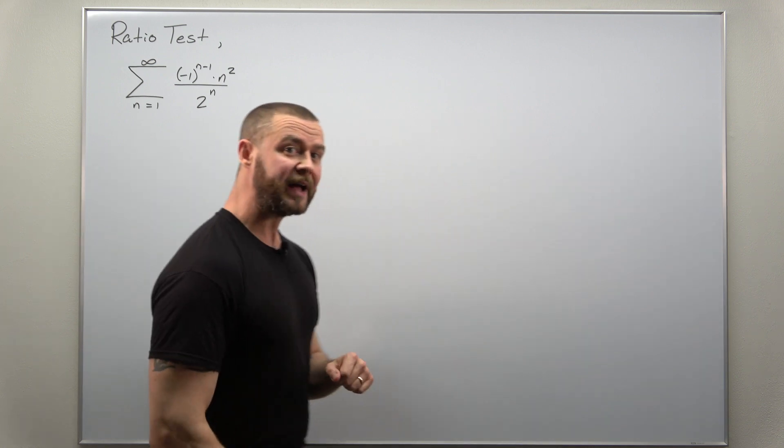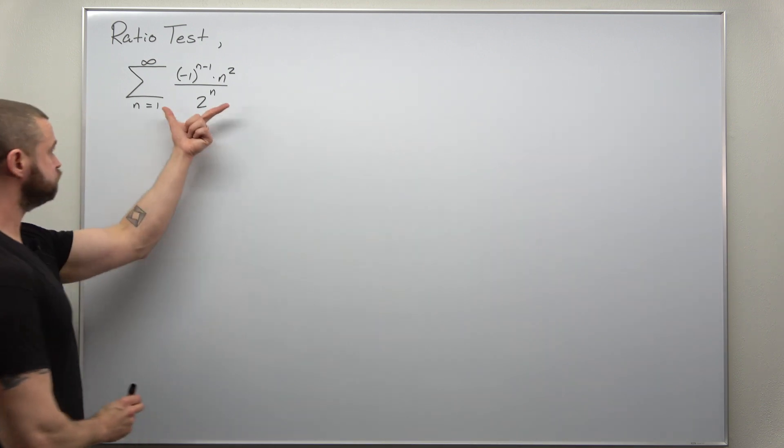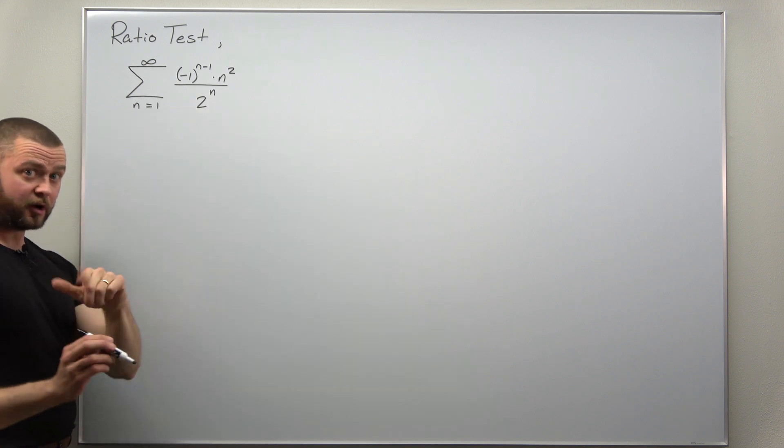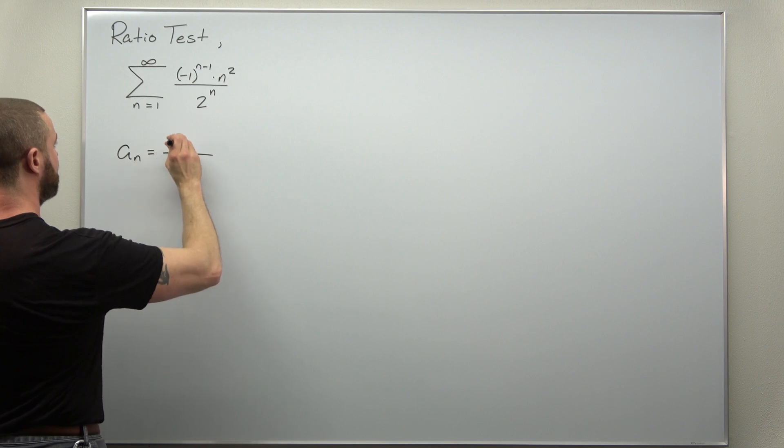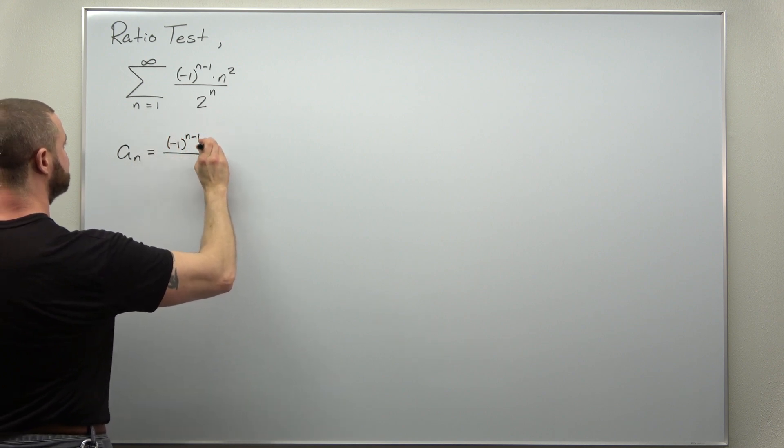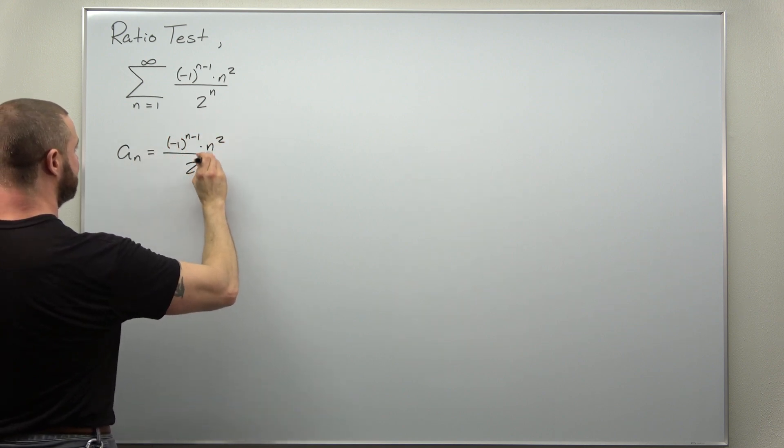First, we're going to identify the term a_n. So negative one to the n minus one times n squared divided by two to the n.